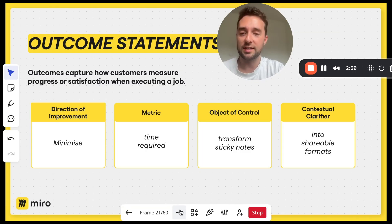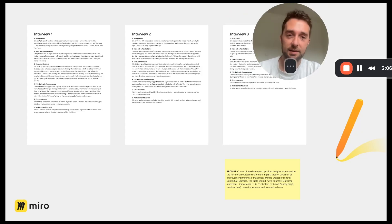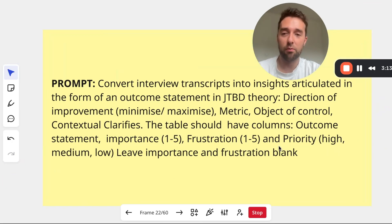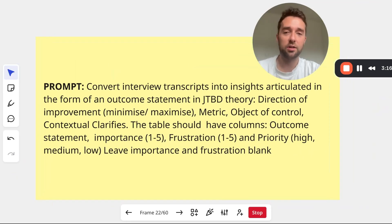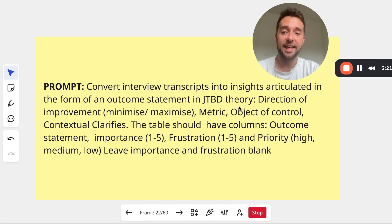So the question is: how do we go from those transcripts from speaking to eight to 12 of our customers into that table of outcome statements that we can then prioritize? This is something that Miro AI can help with. I've written a prompt here asking Miro AI to convert these interview transcripts into insights articulated in the form of an outcome statement in jobs-to-be-done theory.